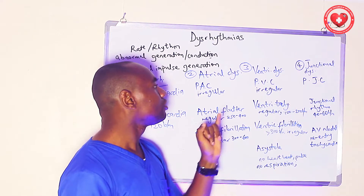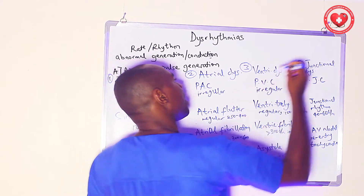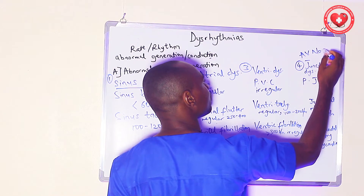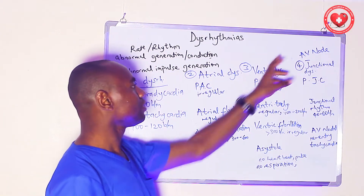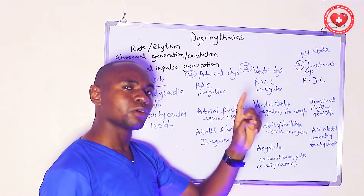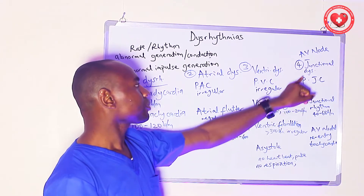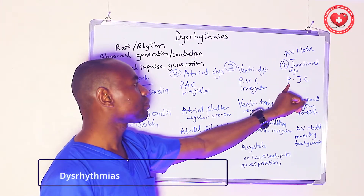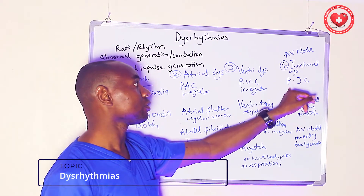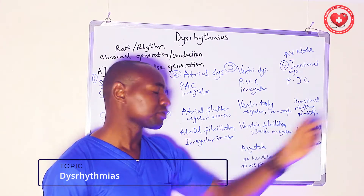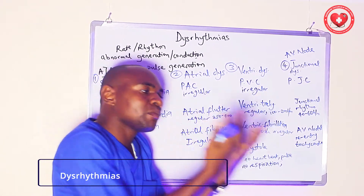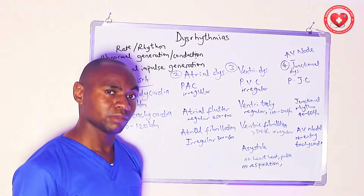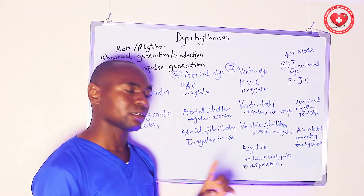The fourth category is junctional dysrhythmias — abnormal electrical impulses that originate from the AV node, also called the AV junction. The first type is premature junctional complexes or contractions, where the AV node releases impulses just before the normal sinus rhythm, which is not supposed to happen. It is irregular in rhythm pattern.